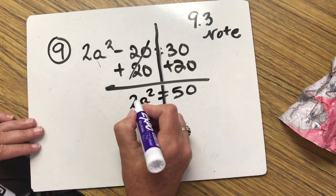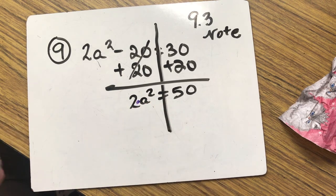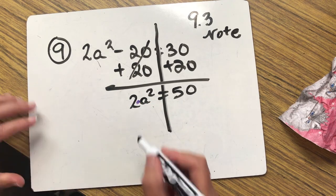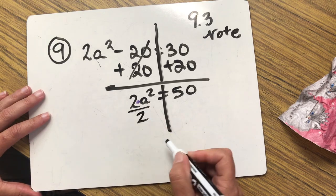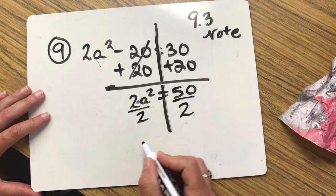We see some multiplication going on there. The opposite of multiply is to divide. Whatever I do to one side, I do it to the other.